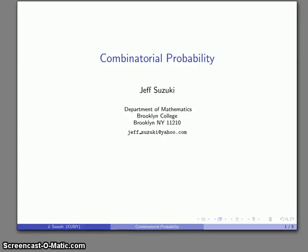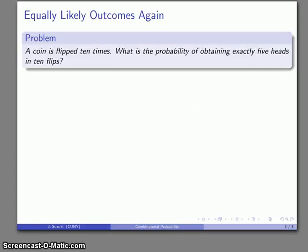One application where we have a sample space of equally likely outcomes concerns something called combinatorial probability. So again, let's consider the following experiment. We flip a coin ten times and we want to find the probability of obtaining exactly five heads in ten flips.